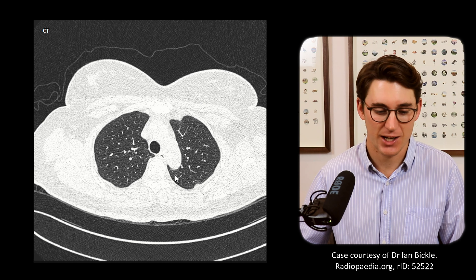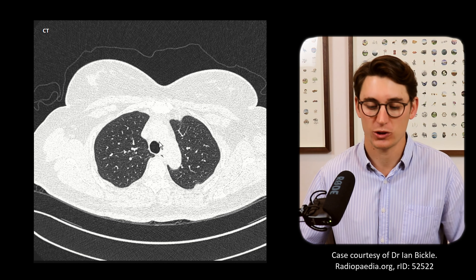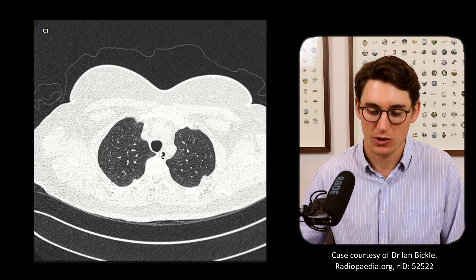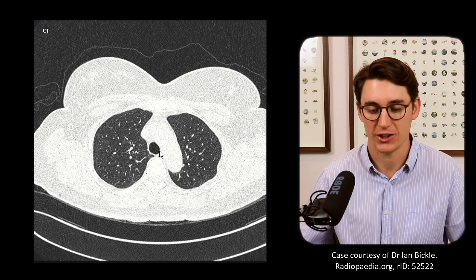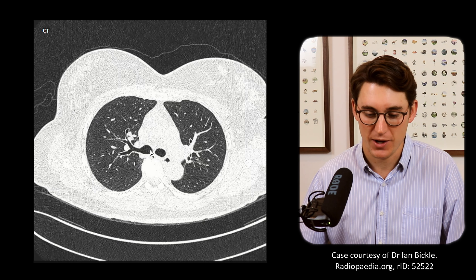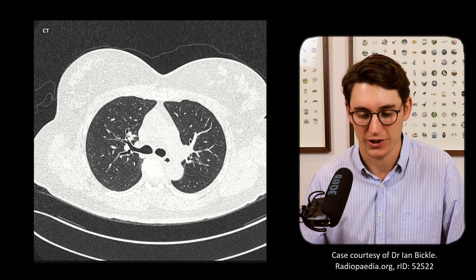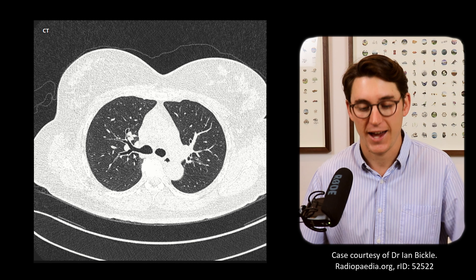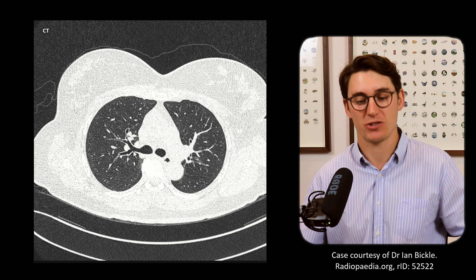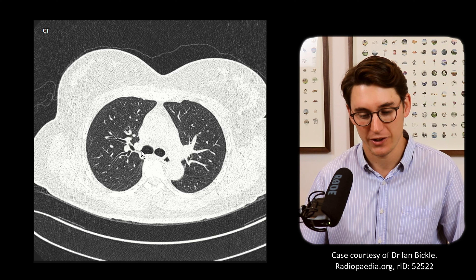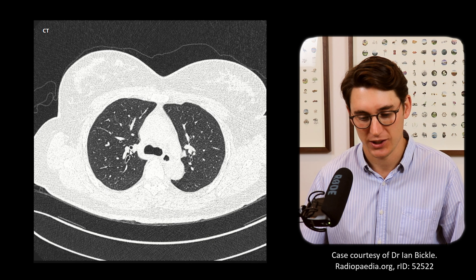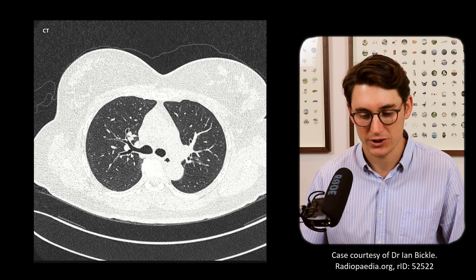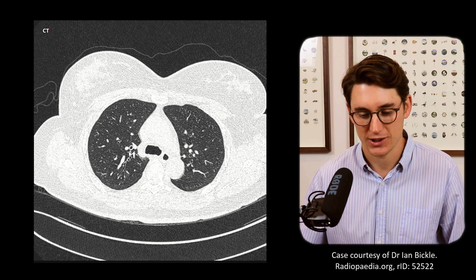On the axial CT scan in lung windows, we start at the superior portion where we can see a single trachea with the esophagus just posterior. We follow the trachea down to the carina to find our right main bronchus, then our right upper lobe bronchus. Here we can clearly see the anterior and posterior segments coming off, and scrolling superiorly reveals the apical segment — apical, anterior, and posterior all accounted for.